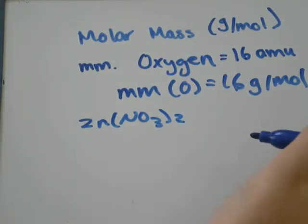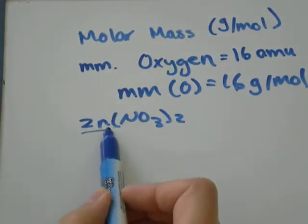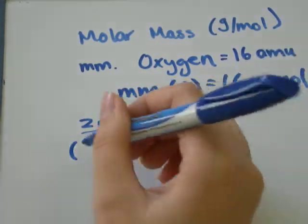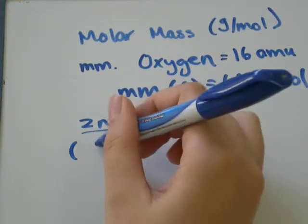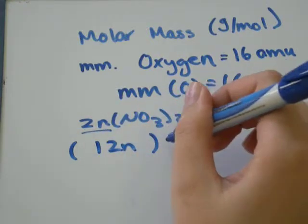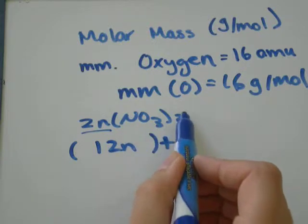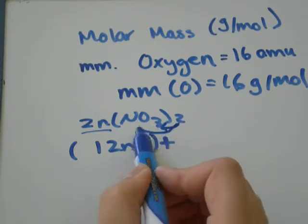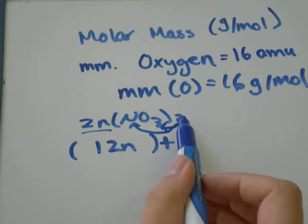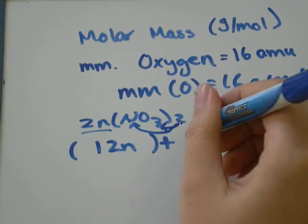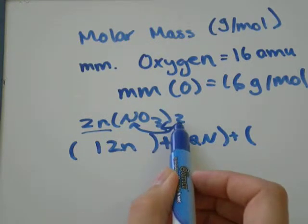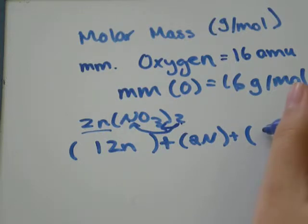So the first thing we need to think is how many atoms of zinc do we have? 1, so we have 1 zinc, plus we have this little 2 down here applies to the 3 oxygen, and it applies to the 1 nitrogen. So we have 2 nitrogen, plus we have 3 times 2 would be 6, and we have 6 oxygen.